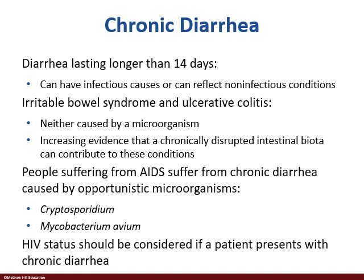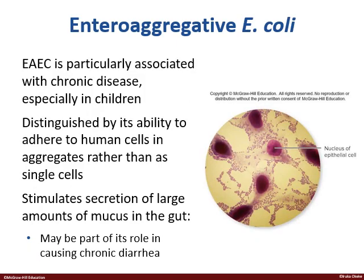They also have opportunistic pathogens like Mycobacterium avium, Cryptosporidium, and a host of others that will overgrow and lead to chronic diarrhea, which can ultimately lead to extreme dehydration, renal issues, renal failure, coma, and death.